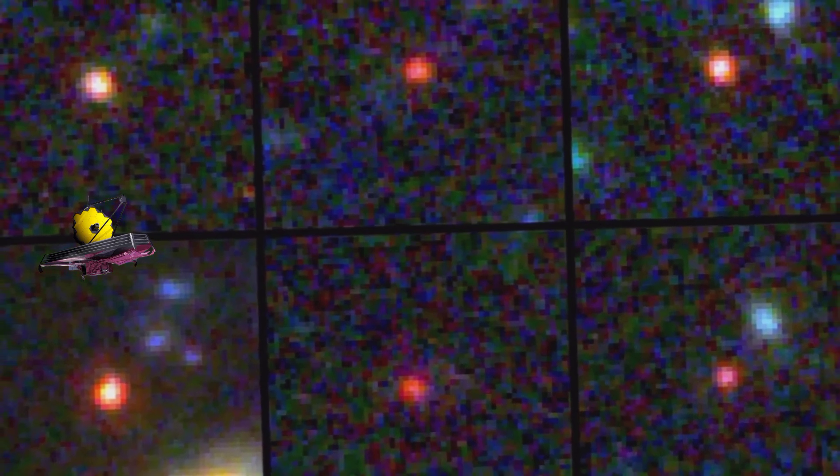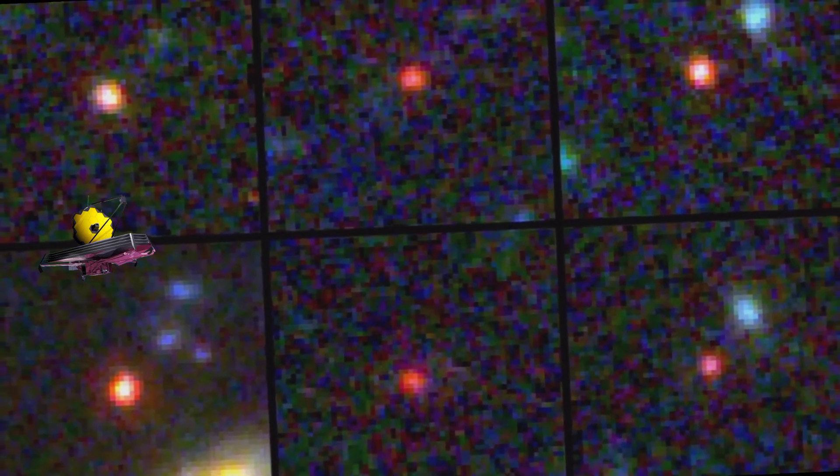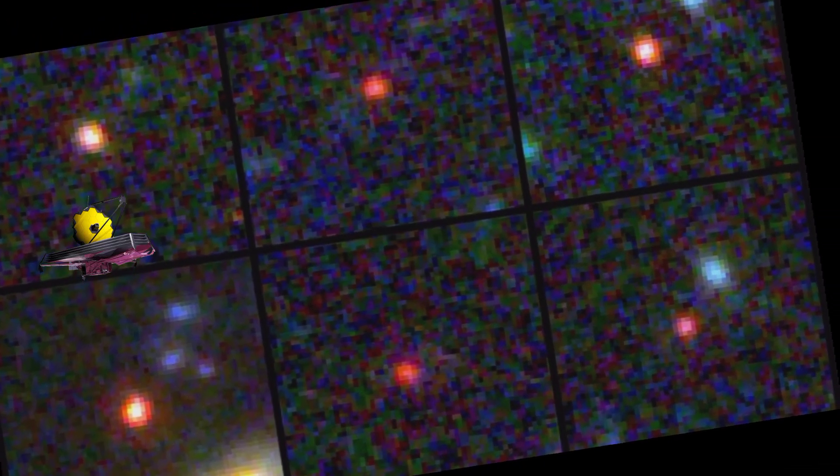Number 7. JWST surprised scientists when it captured these images of six mature galaxies. The small red dots are galaxies from the infancy of our universe, just 500 to 700 million years after the Big Bang. Although such galaxies themselves are not surprising, astronomers found them surprisingly large and the stars in them very old. The discoveries contradict existing ideas of how the universe looked and evolved in its early years and do not match previous observations made by Webb's less powerful predecessor, the Hubble Space Telescope.